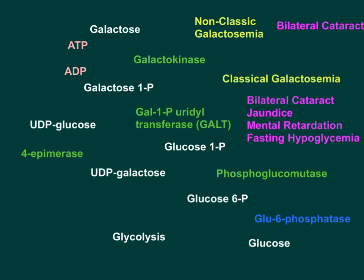Galactose is converted into galactose-1-phosphate, and this job is done by the galactokinase enzyme. Galactokinase uses one ATP and releases ADP — the terminal phosphate from ATP is used to convert galactose into galactose-1-phosphate, with the phosphate attached to the first carbon. Now, what happens to galactose-1-phosphate?